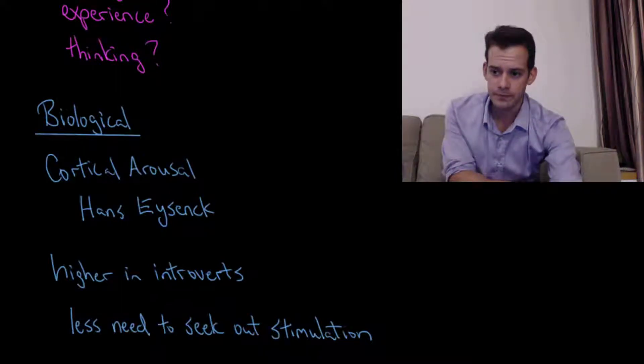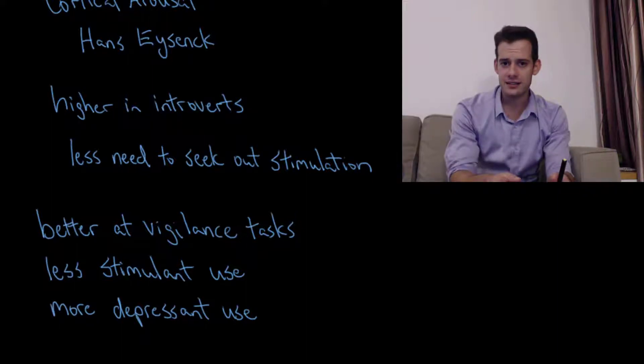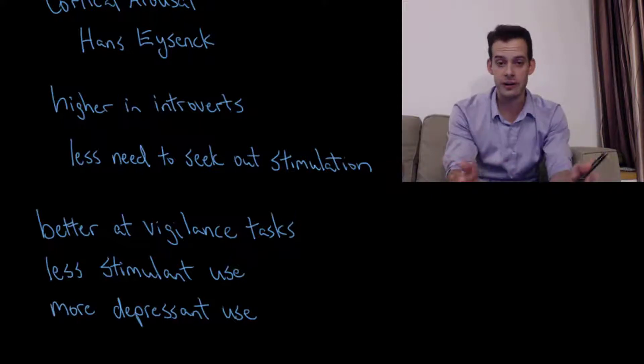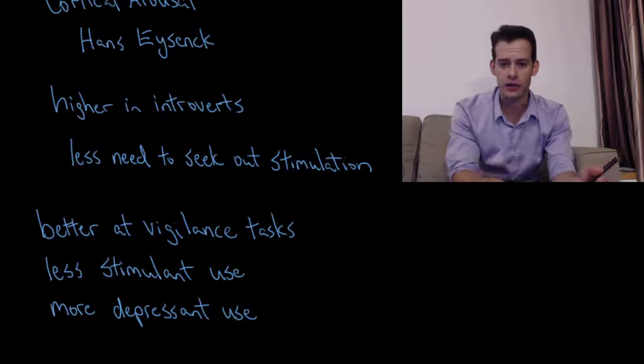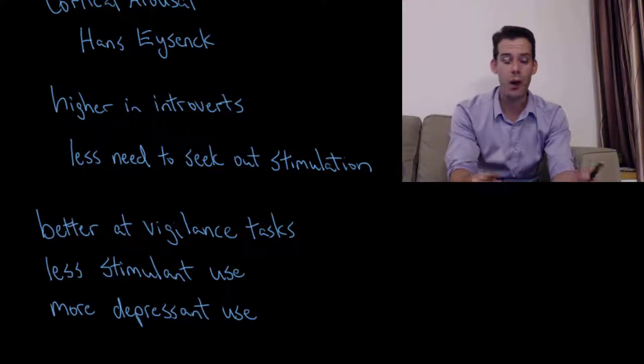And we can also see this in things like the fact that introverts tend to be better at vigilance tasks. So the idea here is vigilance tasks are fairly boring. You're staring at a screen, you're maybe waiting for a light to turn on. The idea is if you're already at your optimal level of cortical arousal then you're better able to be focused on this particular task. But if you're at a lower level of cortical arousal this is going to be very boring for you and you're going to want more stimulation from the environment and you're not going to be getting it during this task and so you might be more distracted, you might not perform as well.